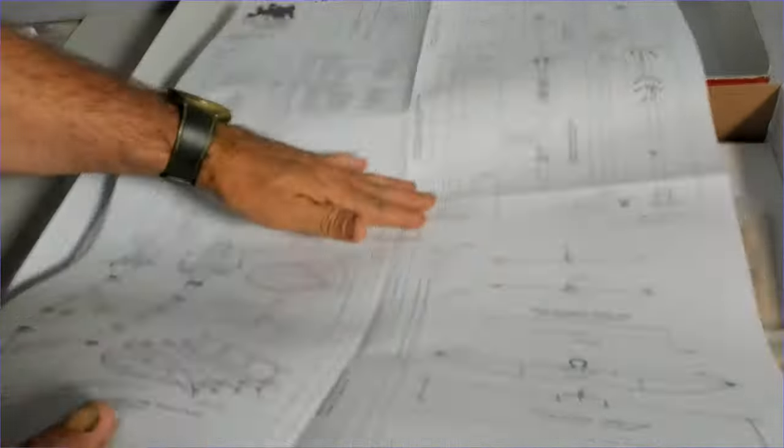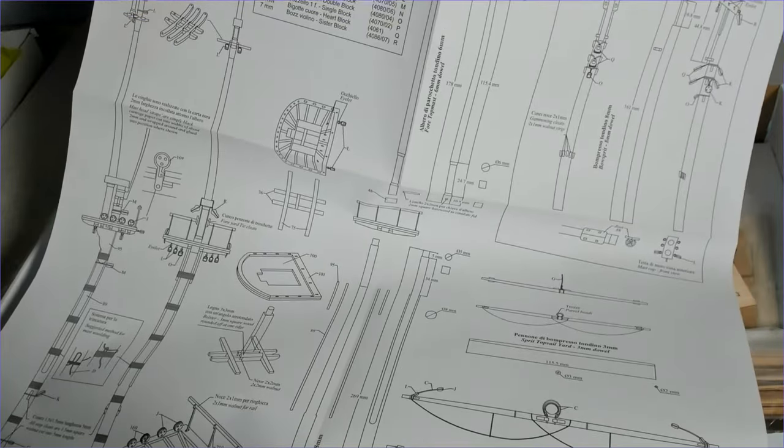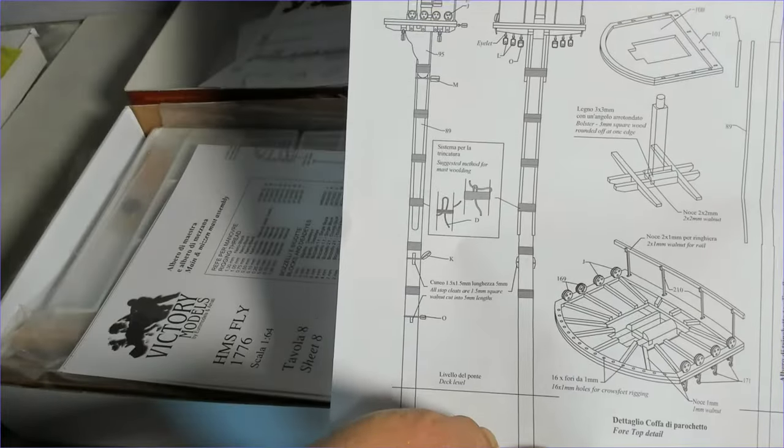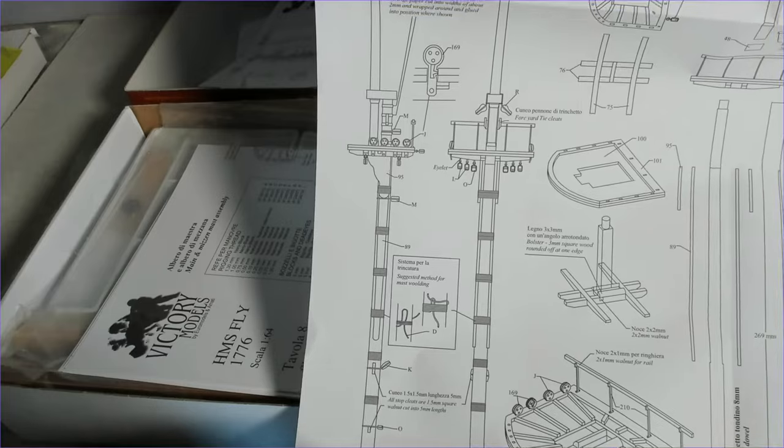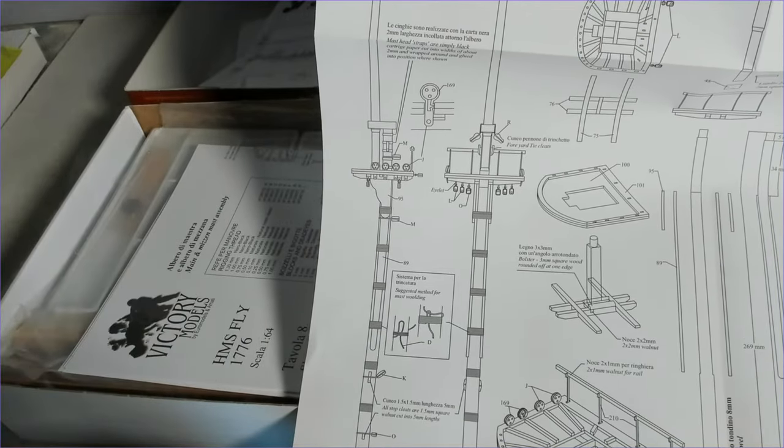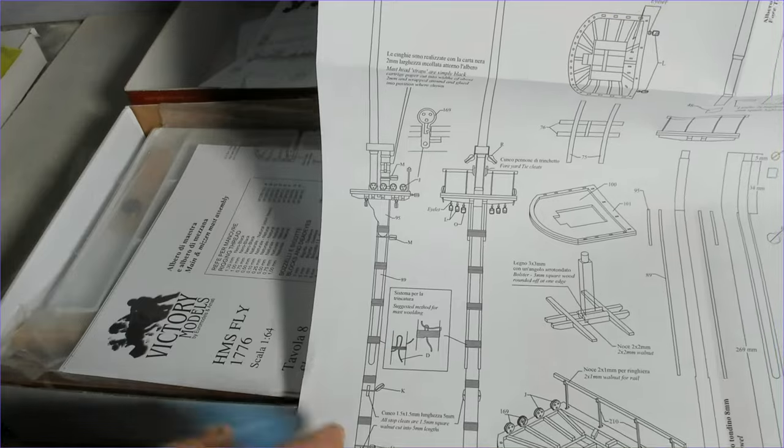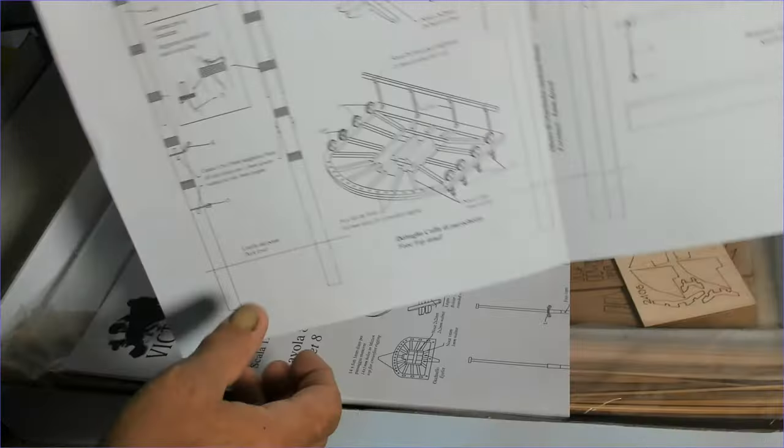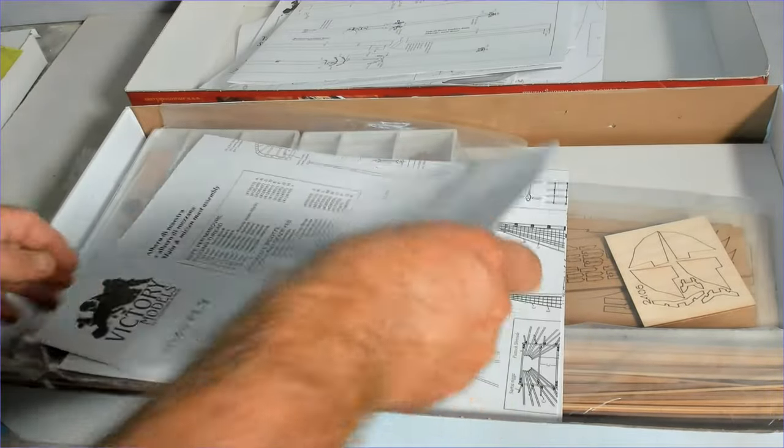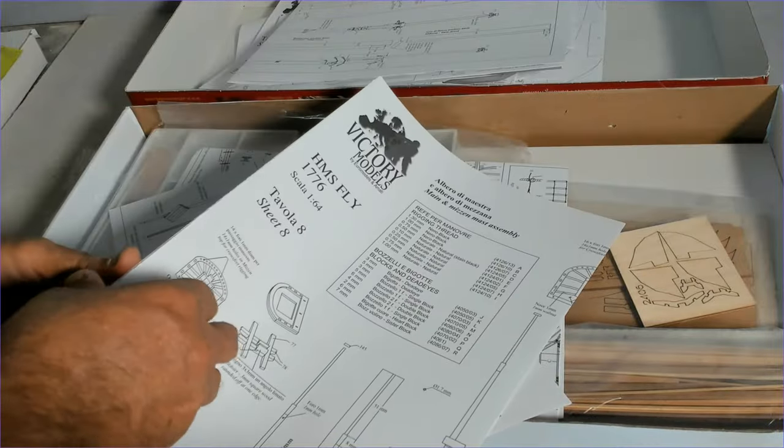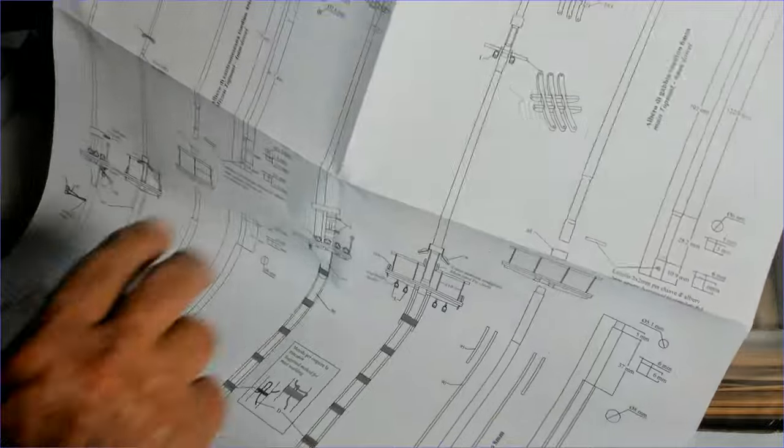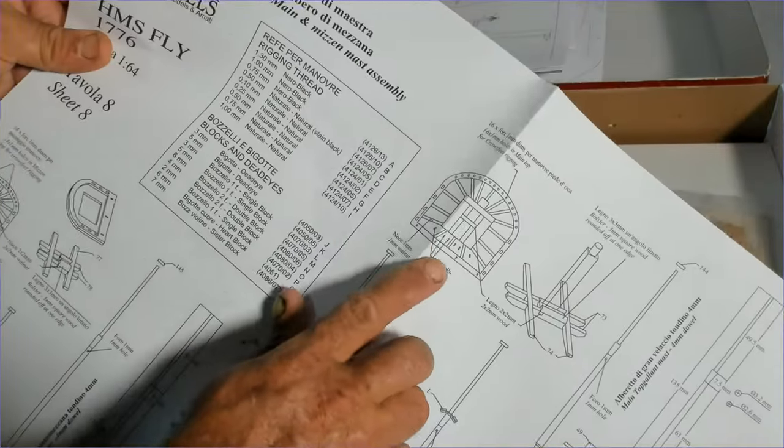This is sheet seven which is all to do with the masts and the yards. It's actually the first time I've actually done masts and yards off a plan. I think it'll probably be easier than the Artesania Latina style of a CD using photos. Now we have sheet eight, more masts, showing how to make the platforms, and they say the type of rigging we need, what size blocks and dead eyes.